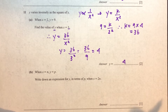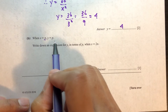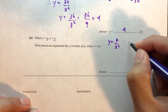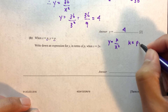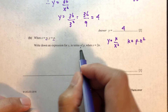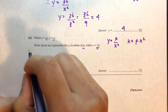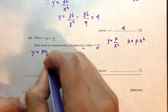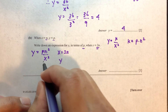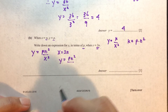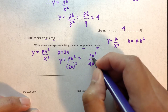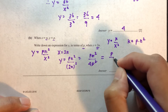Now moving on to part B. When x equals n and y equals p, using the same inverse variation function y equals k over x squared, k equals p times n squared. To write the expression for y when x equals 2n: y equals pn squared divided by (2n) squared, which is pn squared over 4n squared. The n squared terms cancel, giving p over 4.